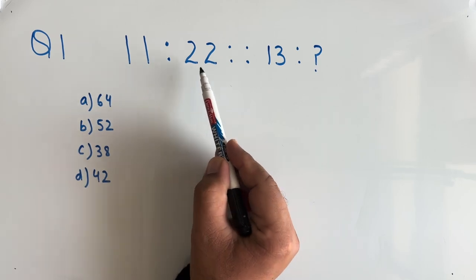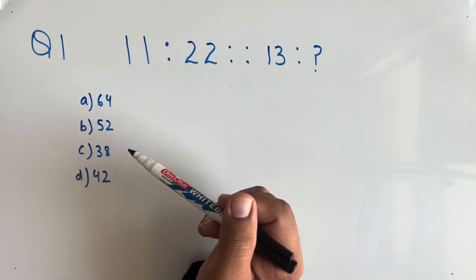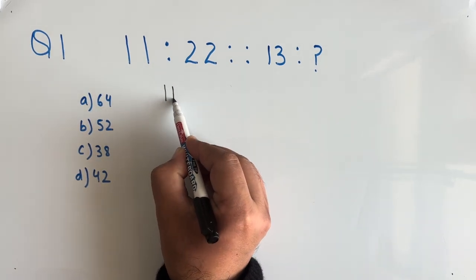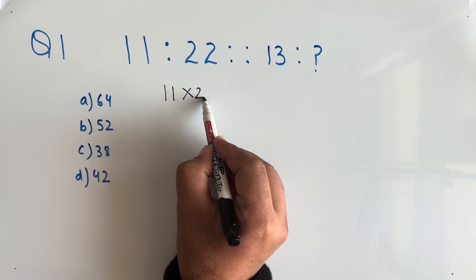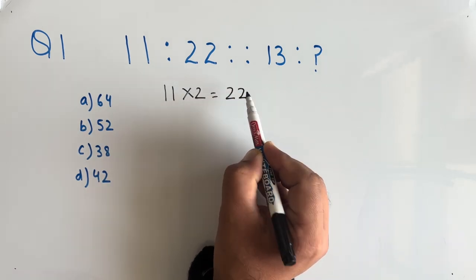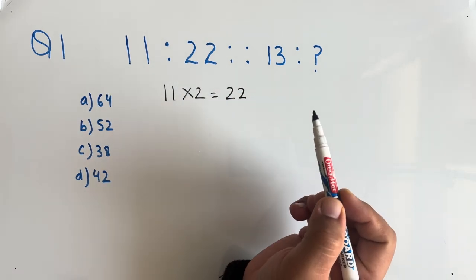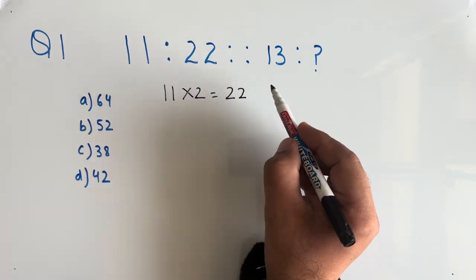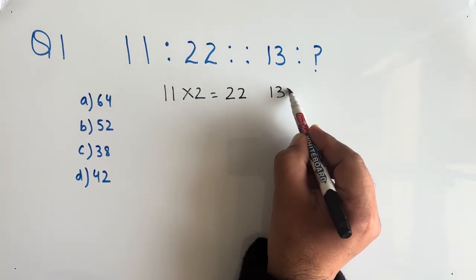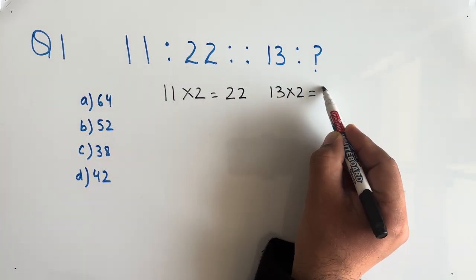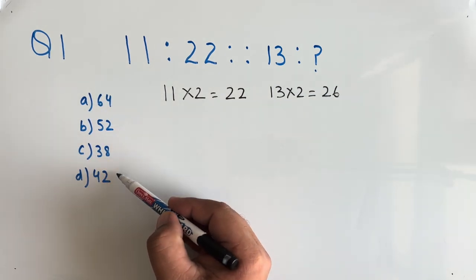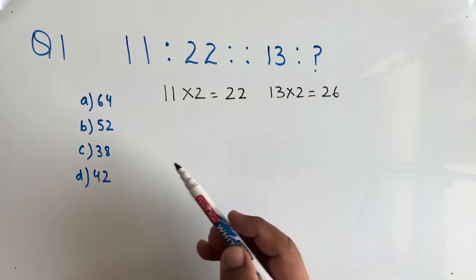Now 11 is to 22. If we multiply 11 by 2, we get 22. In the similar way, if we multiply 13 by 2, we get 26. But 26 is not in the option.